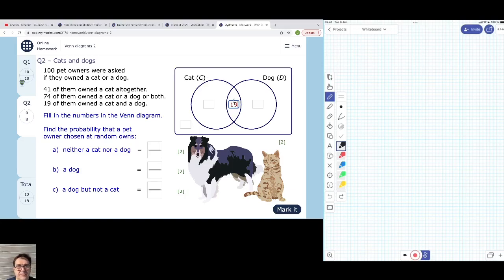Now 19 of them also own a dog. So 41 minus 19 gives you—what does it give you? 22. So there are 22 people that only own a cat.